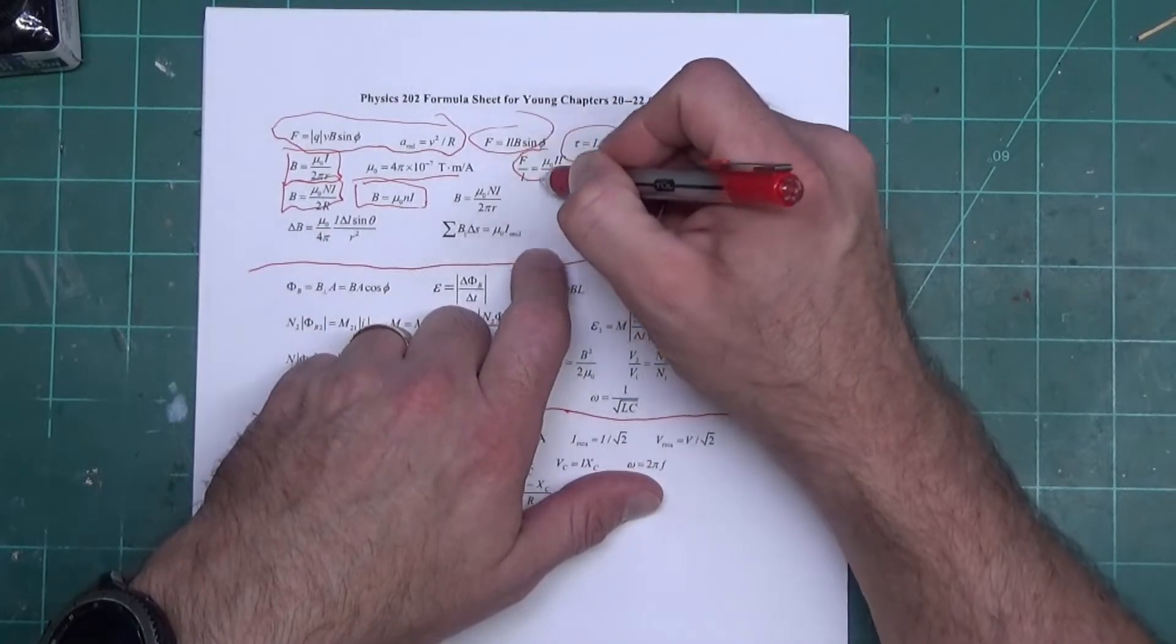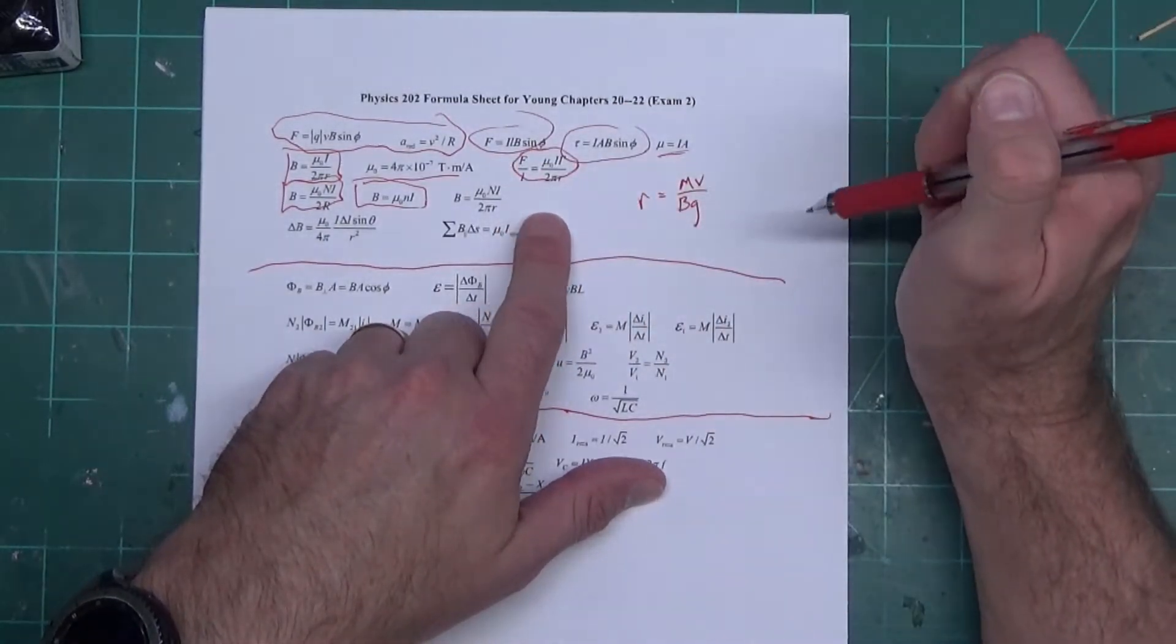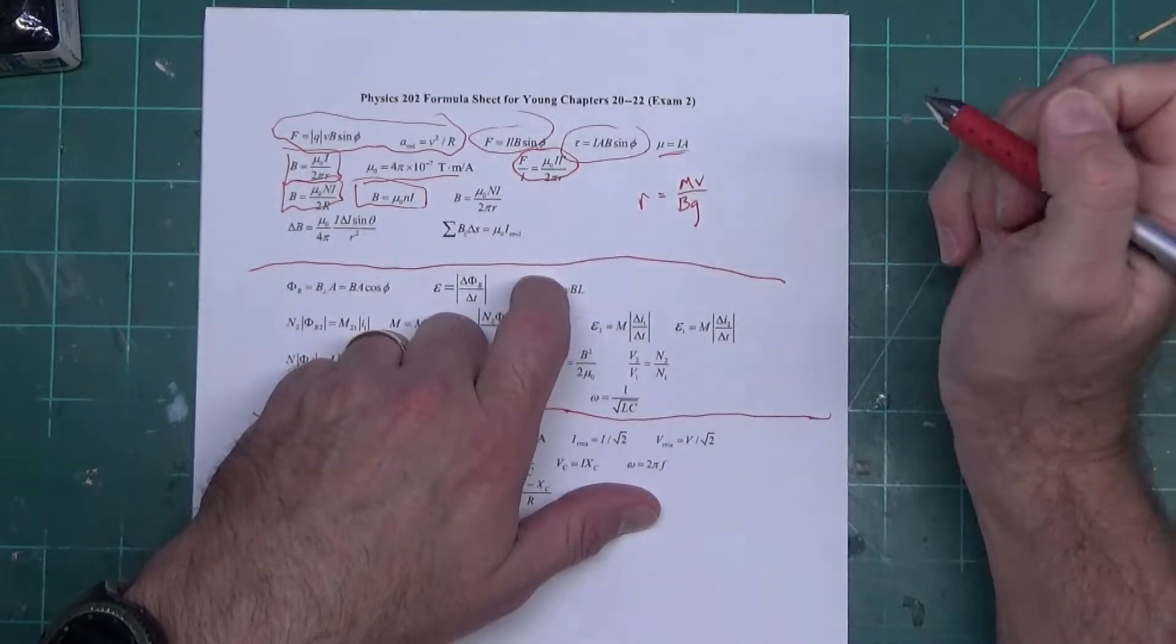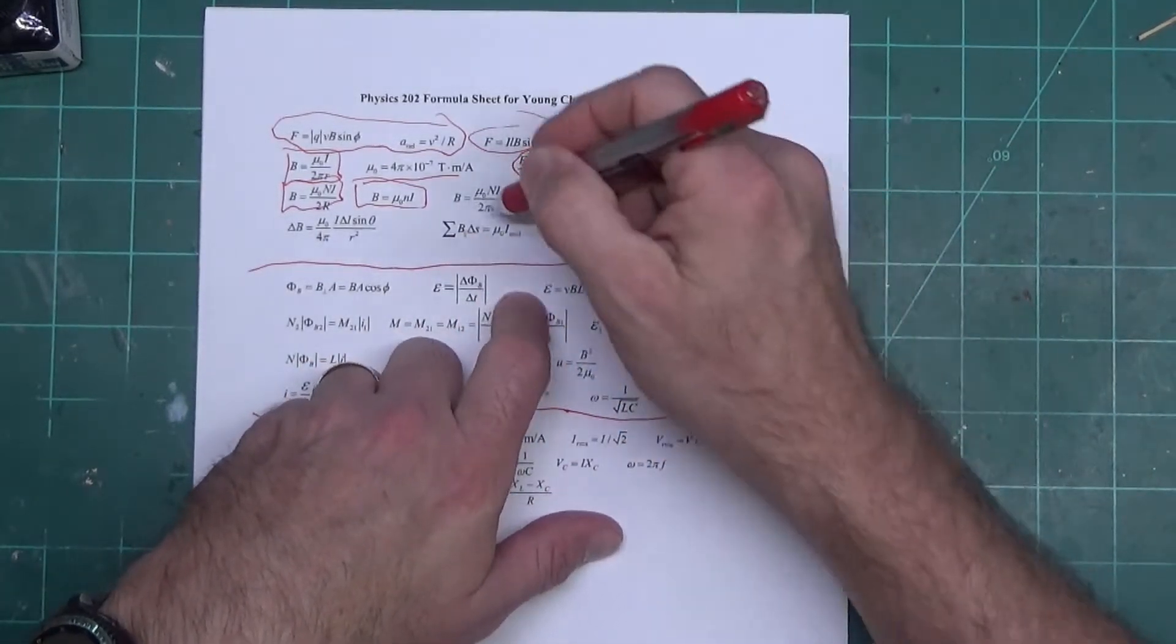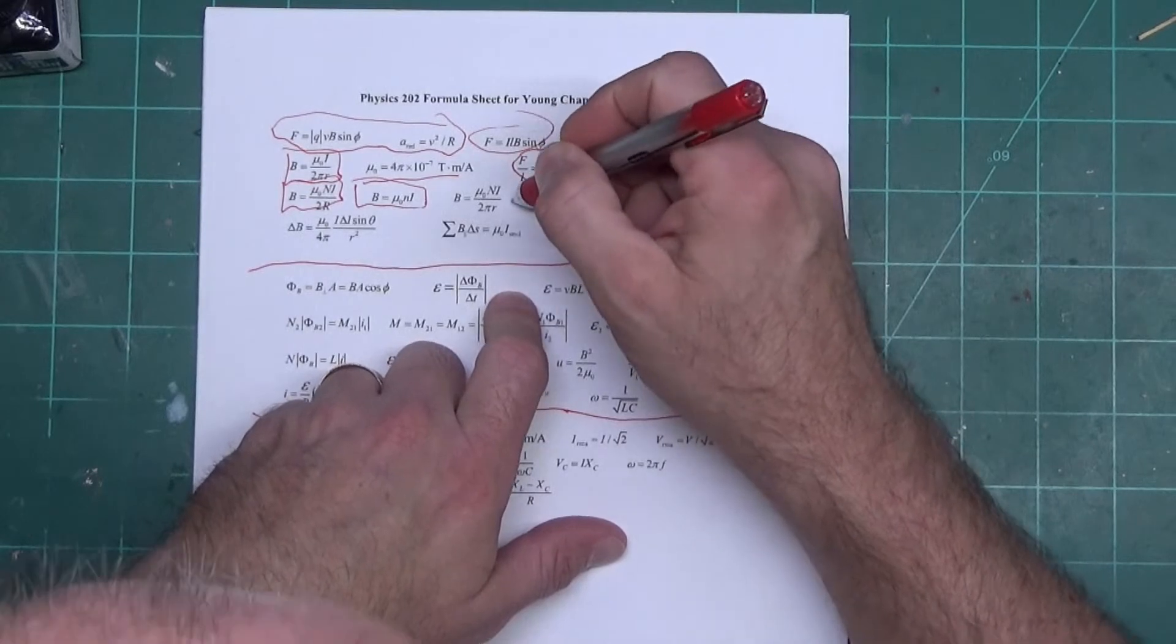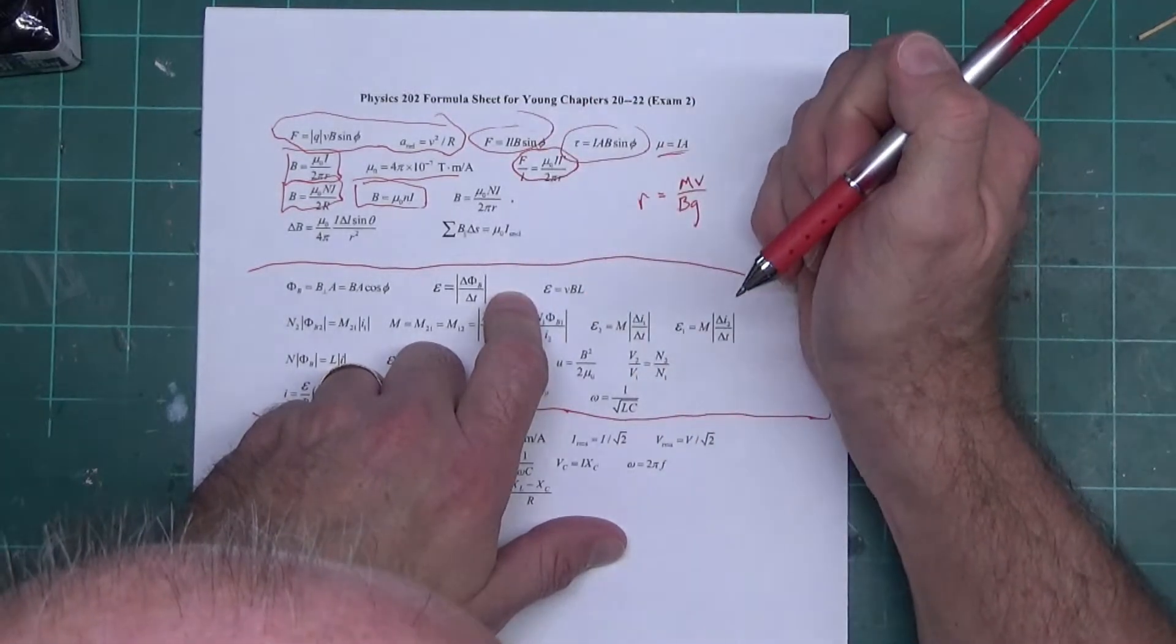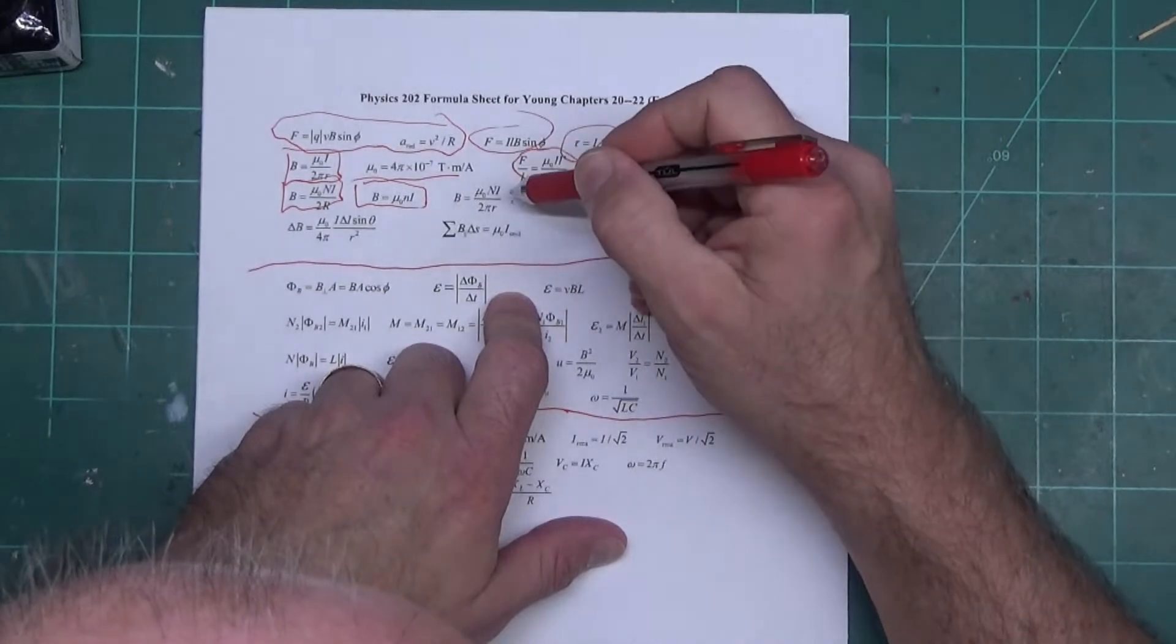This is the force on two wires carrying a current, and I never would have written it that way, so I don't know why he did.